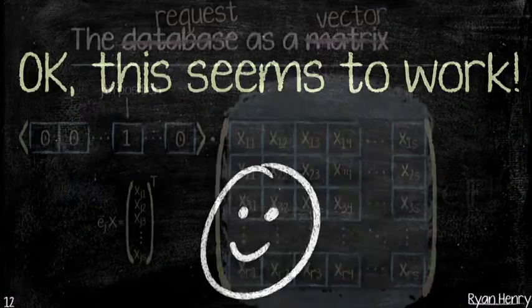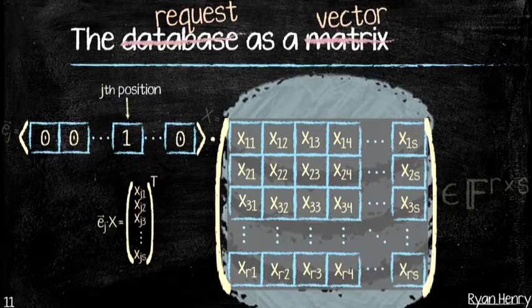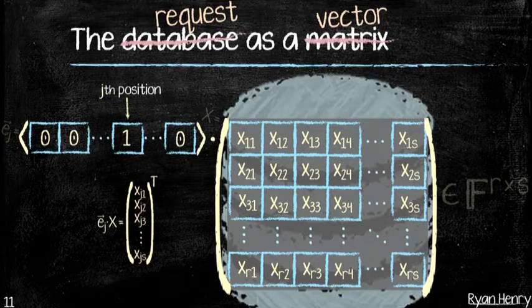To clarify the matrix dimensions: we multiply a row vector of length R (matching the database height) by the R-by-S database matrix, getting a row vector of length S. It was written transposed on the slide just to fit.